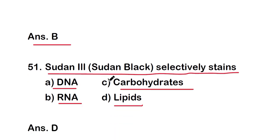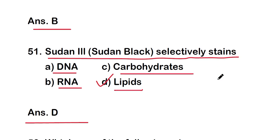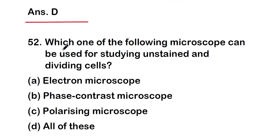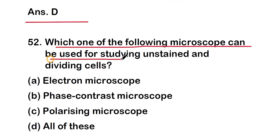Next question: Sudan 3 or Sudan black selectively stains — DNA, RNA, carbohydrates, or lipids? The right answer is option D — Sudan 3 or Sudan black selectively stains lipids.